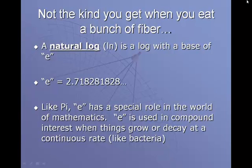E is a special number. It's 2.718281828 and so on. Like pi, it has its own role in the world of mathematics. E is used in compound interest when things grow or decay continuously, like bacteria or people. Things that grow or decay continuously would be compounded with e. Just like in geometry, we use pi when we're dealing with circles.